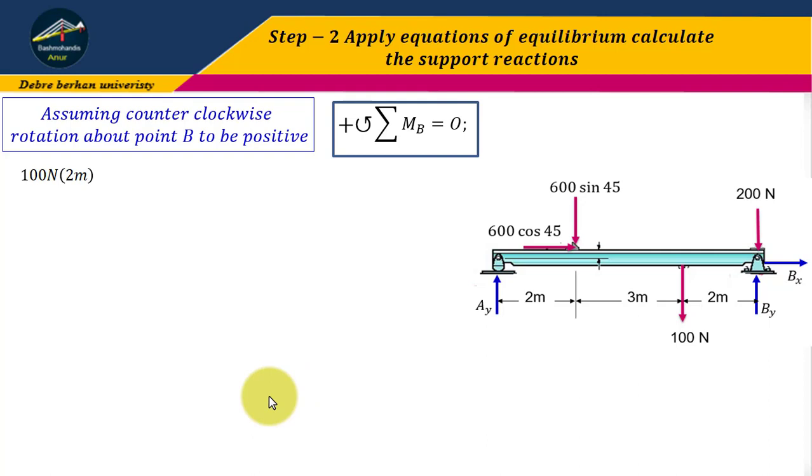About point B, 100 times 2 meters. Next, the 600 sin 45 degree force about point B has a perpendicular distance of 3 meters plus 2 meters, which is 5 meters. Therefore, 600 sin 45 times 5 meters. It's positive because our assumption is counterclockwise moment is positive.